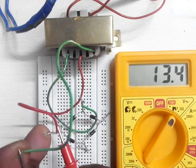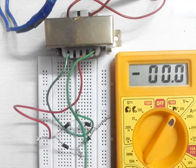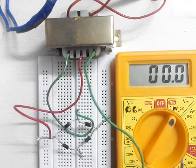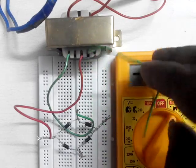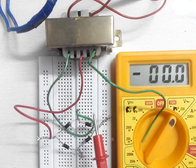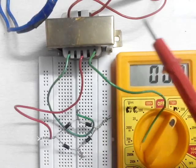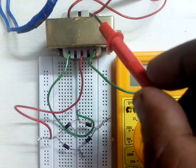Similarly, we have the second tap which will also give almost 13 volt AC reading. So this is a step-down transformer which has stepped down the voltage from 230 volt to almost 13 volt AC.